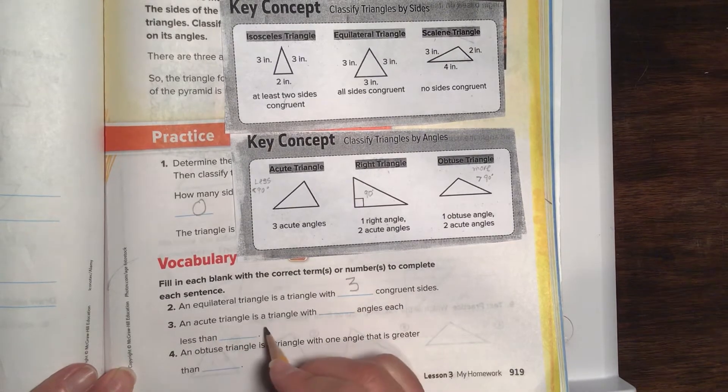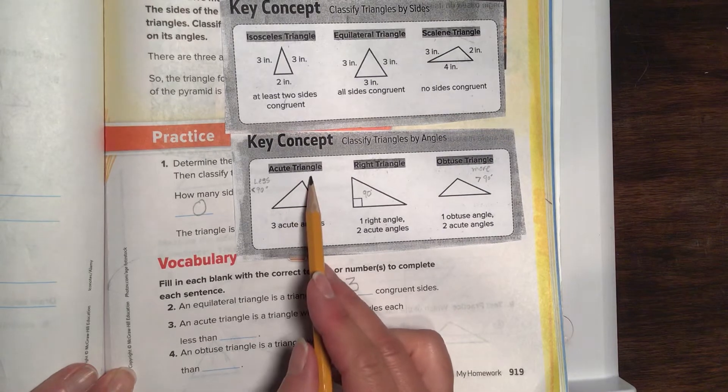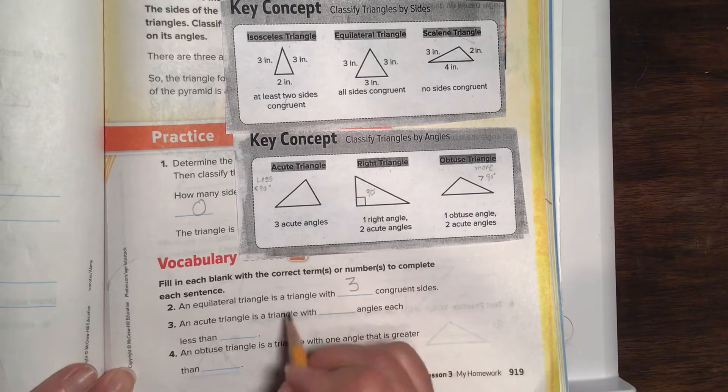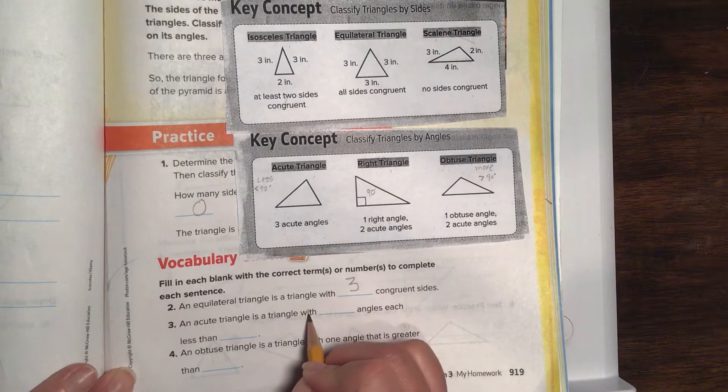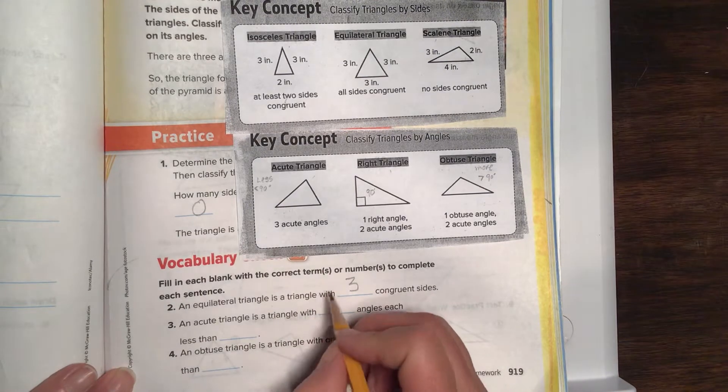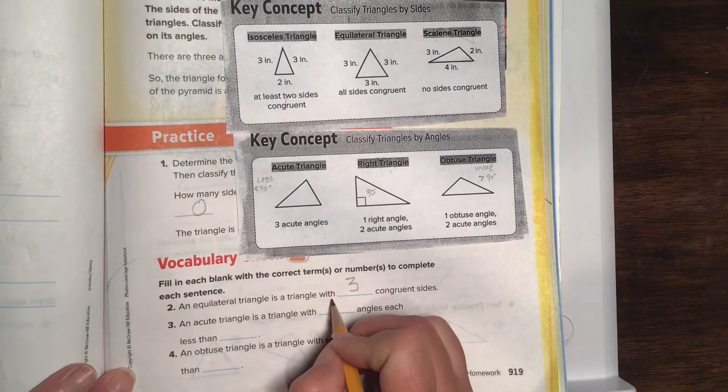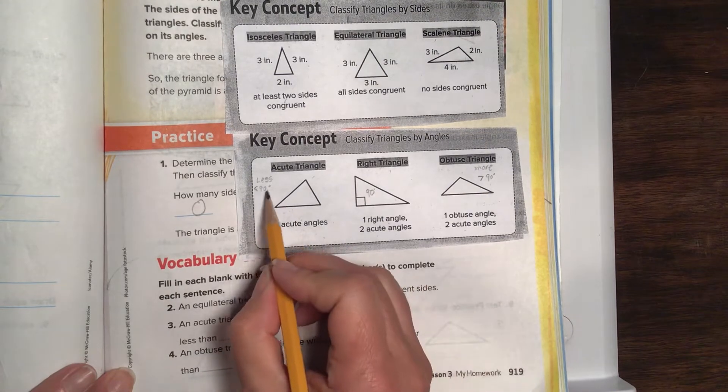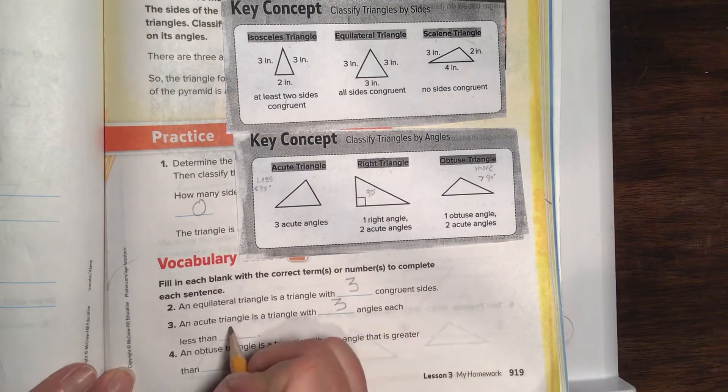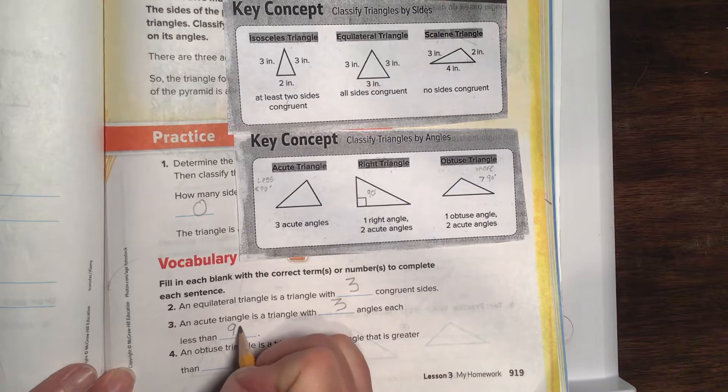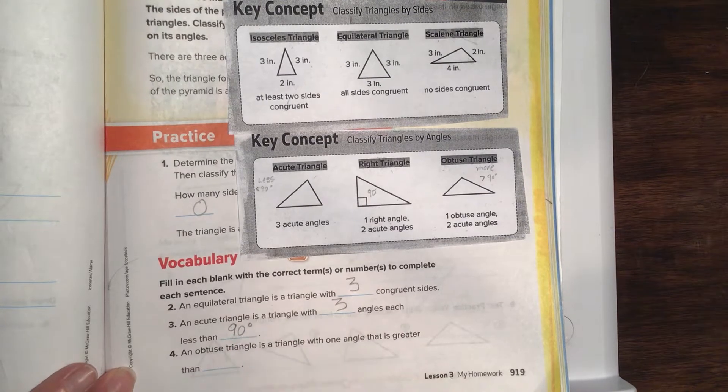An acute triangle is a triangle. Well, let's look at acute. Okay, there's acute. Three acute angles. An acute triangle is a triangle with three angles, each less than, yeah, good job. Less than 90. Do that little degree sign. 90 degrees.